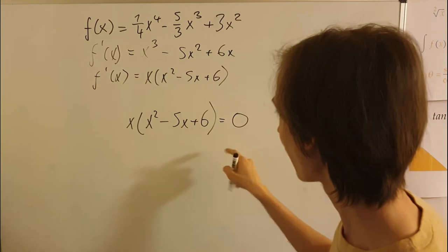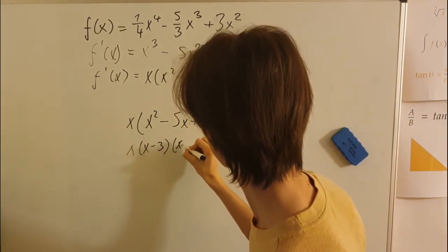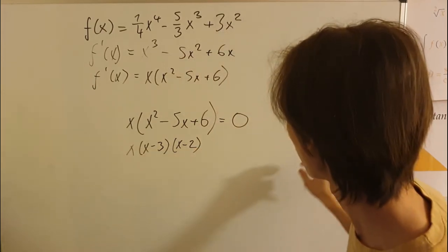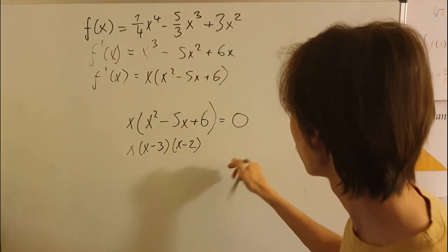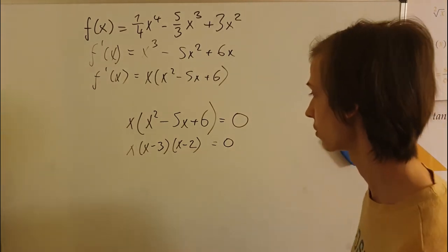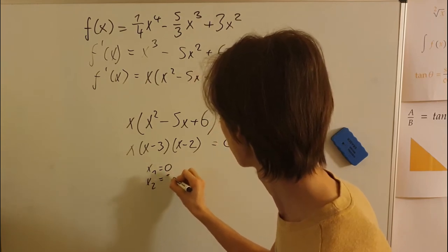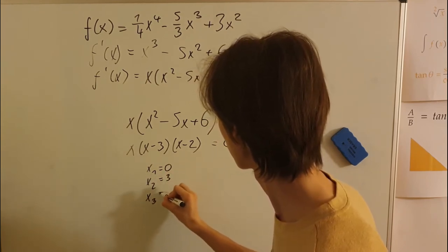And we can rewrite this even further to this. Okay? So we can rewrite this to this and now it's visible where the derivative is equal to zero. At x equals zero, at x equals three, and at x equals two.